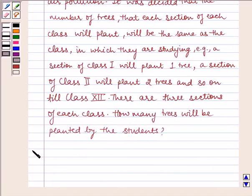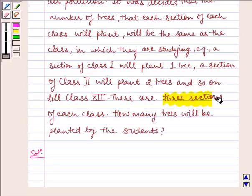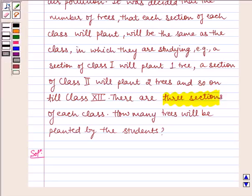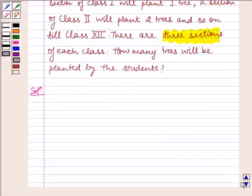Now let us proceed on to the solution. Since each section of each class plants the same number of trees as the class number and it is also given that there are three sections of each class, total number of trees planted by each class is